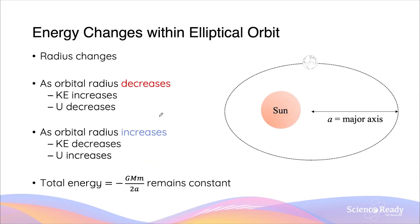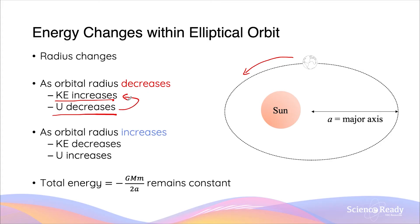For elliptical orbits, the radius obviously changes — this is the major difference from circular orbits. As the planet is orbiting the sun and approaching the part where the radius is shorter, its kinetic energy increases while its gravitational potential energy decreases. The two energy types change in such a way that the total energy remains constant. Using the law of conservation of energy, gravitational potential energy is being transformed into increasing kinetic energy, so they change by the same amount.